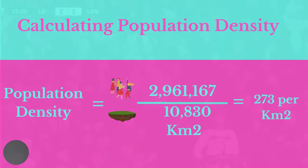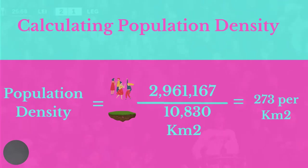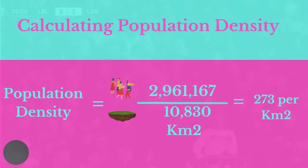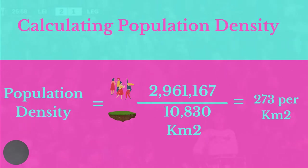This means that for every kilometer square unit, 273 persons can be accommodated if they were evenly spread across the land. However, this is never the case, which is why we also have to look at the population distribution separately.